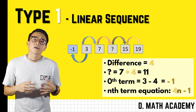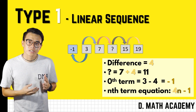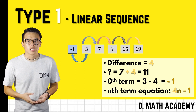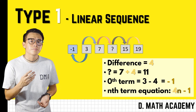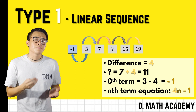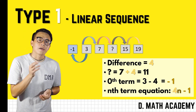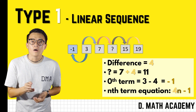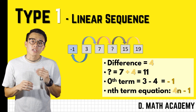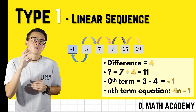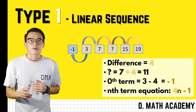Combining those two variables, the final n-term equation is 4n minus 1. To verify, substitute four into the equation: four times four minus one equals 15, which matches the question. So the equation is correct.